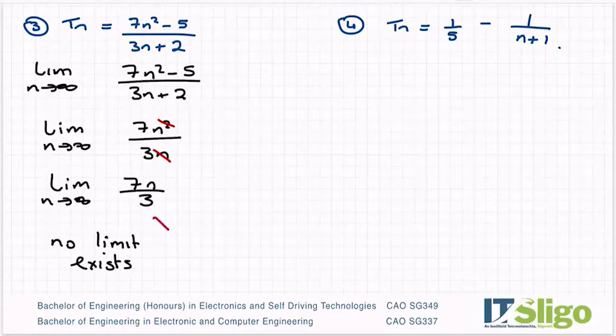Some places you may see infinity written down for that one. And mathematically, that is not correct. It's not correct to say that infinity is a limit, because infinity doesn't really exist. It's this made up term. So it's better to say that no limit exists rather than put down infinity.